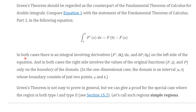In both cases — Green's theorem and the Fundamental Theorem — there's an integral involving derivatives on the left side, and the right side involves the value of the original functions only on the boundary of the domain. In the one-dimensional case, the domain is an interval from a to b, and so the boundary consists of just two points, a and b. Green's Theorem has many applications, but it's not easy to prove in general. We will give a proof for the special case where the region is both type 1 and type 2.